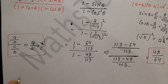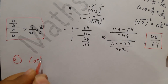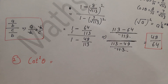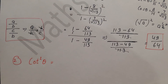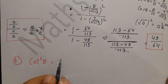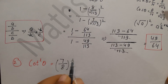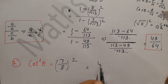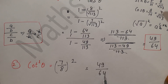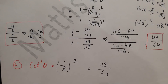For the second part, we have to find the value of cot²θ. We are given cot θ = 7/8. So cot²θ = (7/8)² = 7² / 8² = 49/64. This is our final answer.